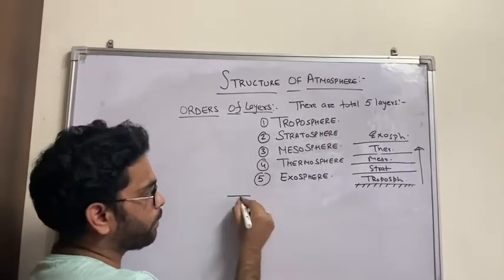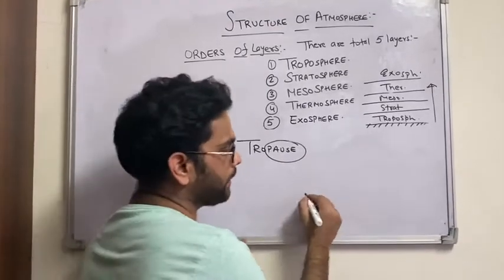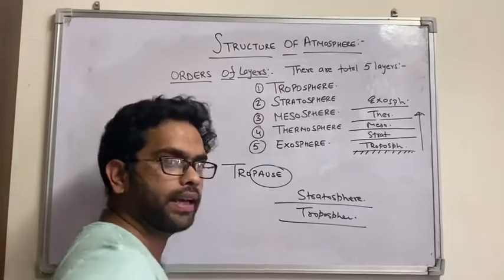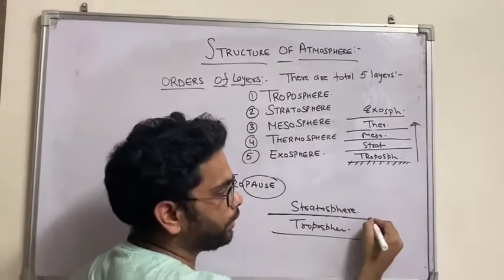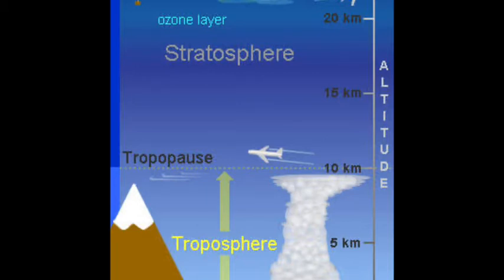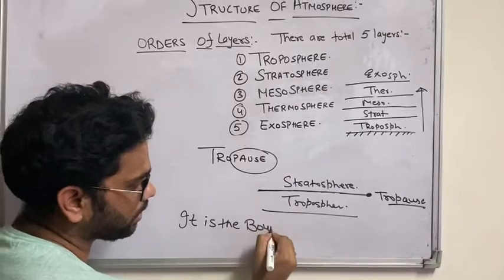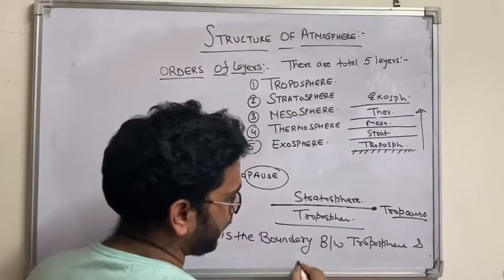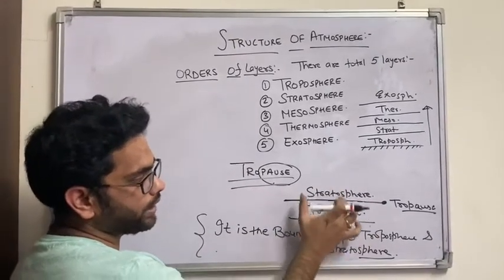Another important term is tropopause. The word 'pause' indicates a boundary. This is your troposphere and above it is your stratosphere. The transition layer between them — the point at which the troposphere ends — is called the tropopause. Tropopause is the boundary between the troposphere and the stratosphere.